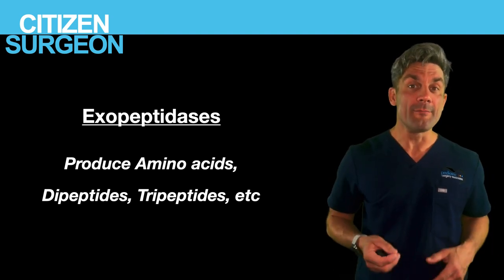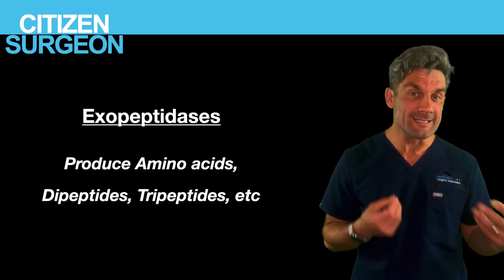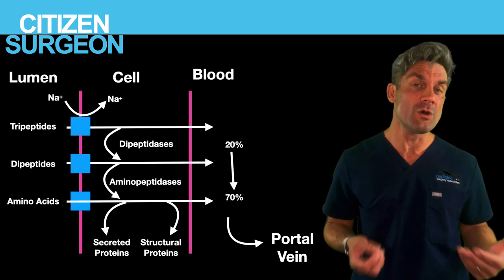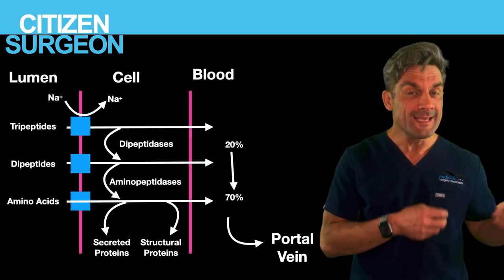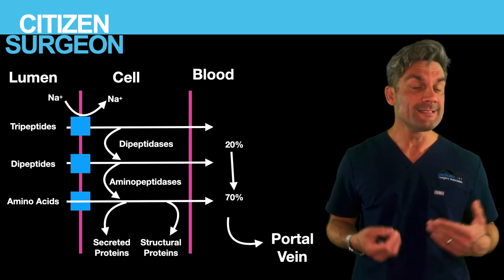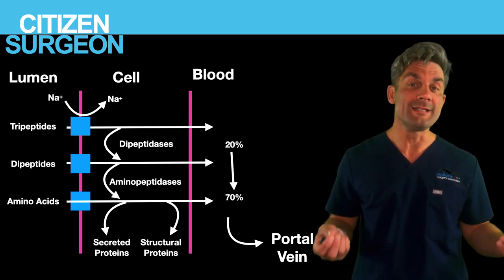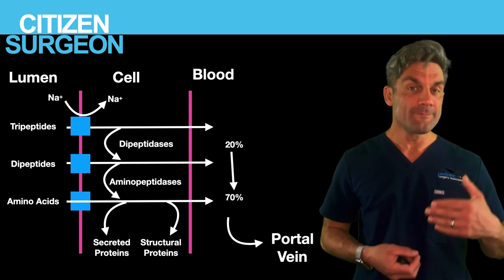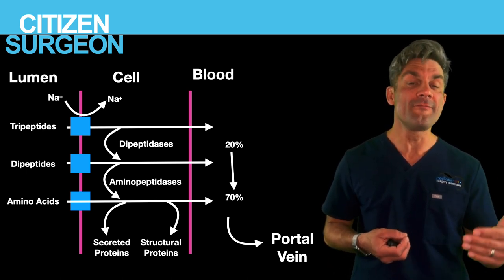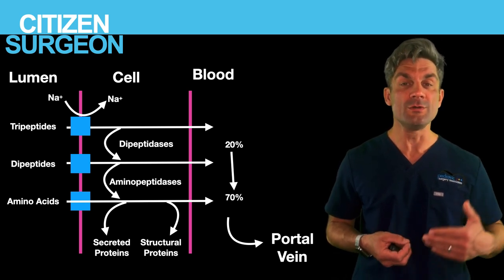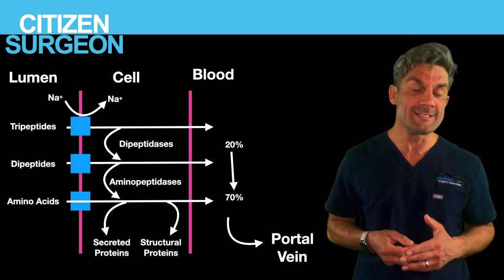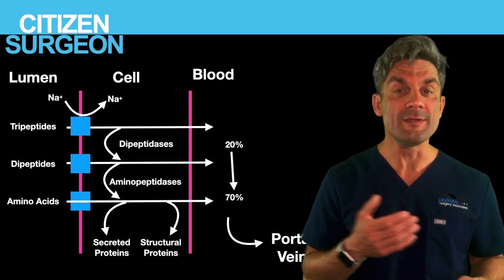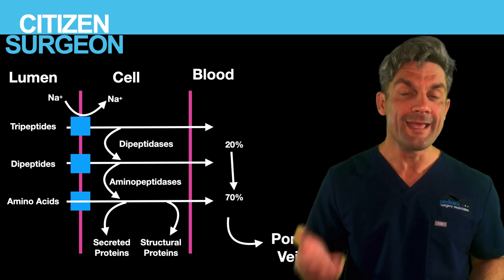Di- and tripeptides and single amino acids get from the lumen into the enterocyte again through facilitated diffusion with sodium — sodium passes down its osmotic gradient and brings along single amino acids, di-peptides, or tripeptides. Within the cell, those di- and tripeptides are further broken down. Some become secreted or structural proteins for the cell, and the rest are transported out of the enterocyte and into the blood.